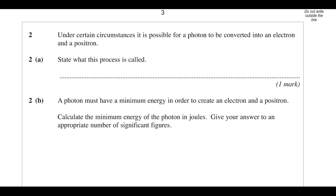Under certain circumstances it's possible for a photon to be converted into an electron and a positron. What is that process? It's when a photon encounters some matter, and that process is called pair production.